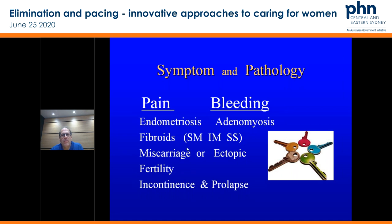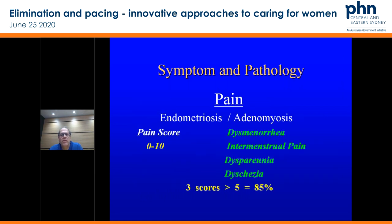The key conditions include endometriosis, adenomyosis, fibroids, miscarriage, fertility issues, ectopics, and incontinence products. Think about the relationship for their symptom and pathology.